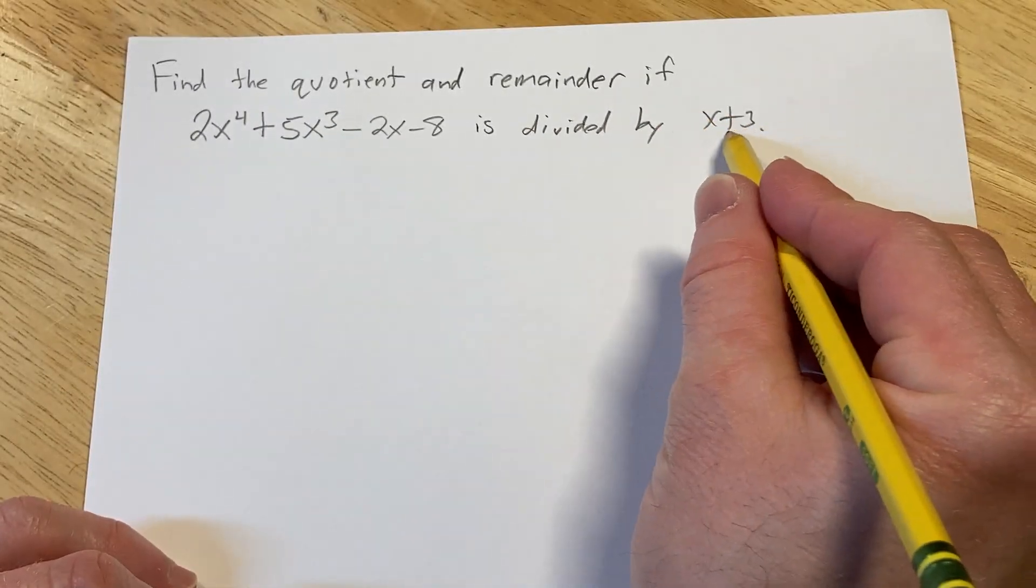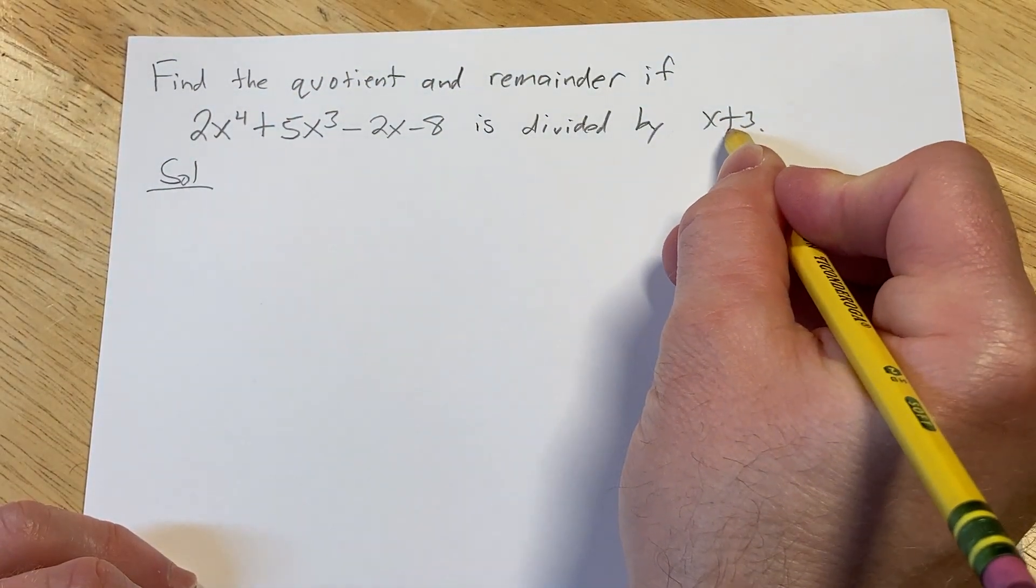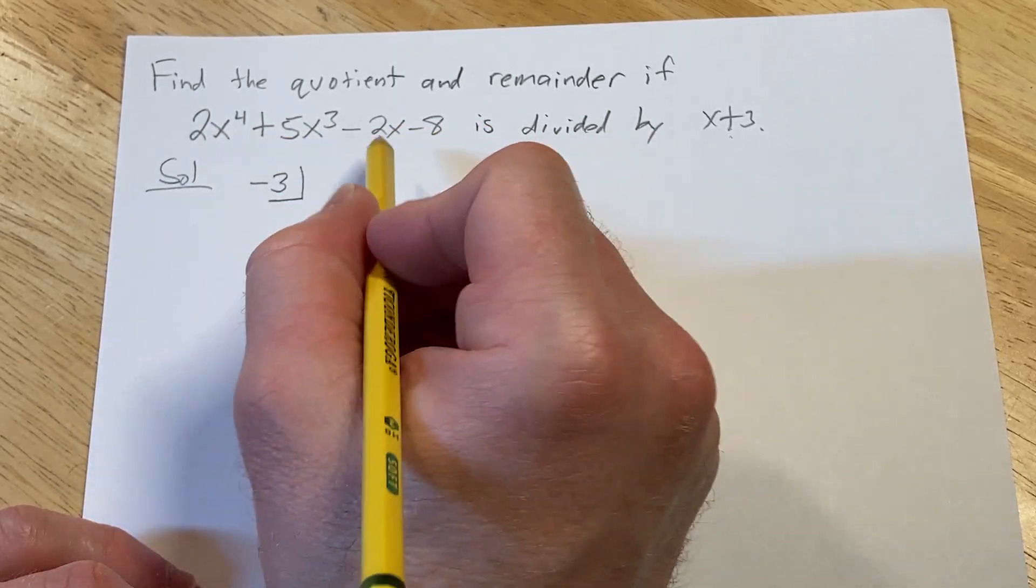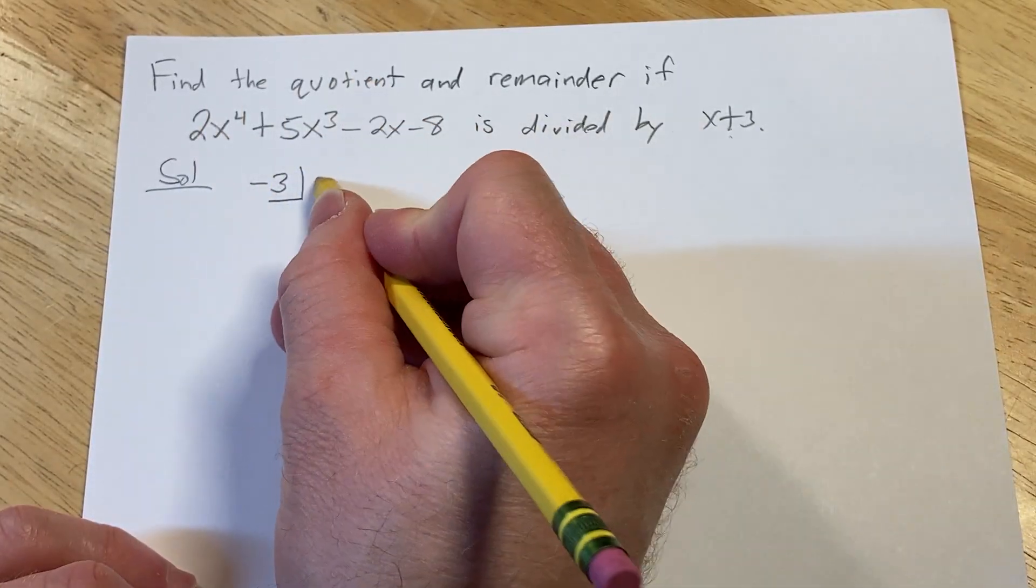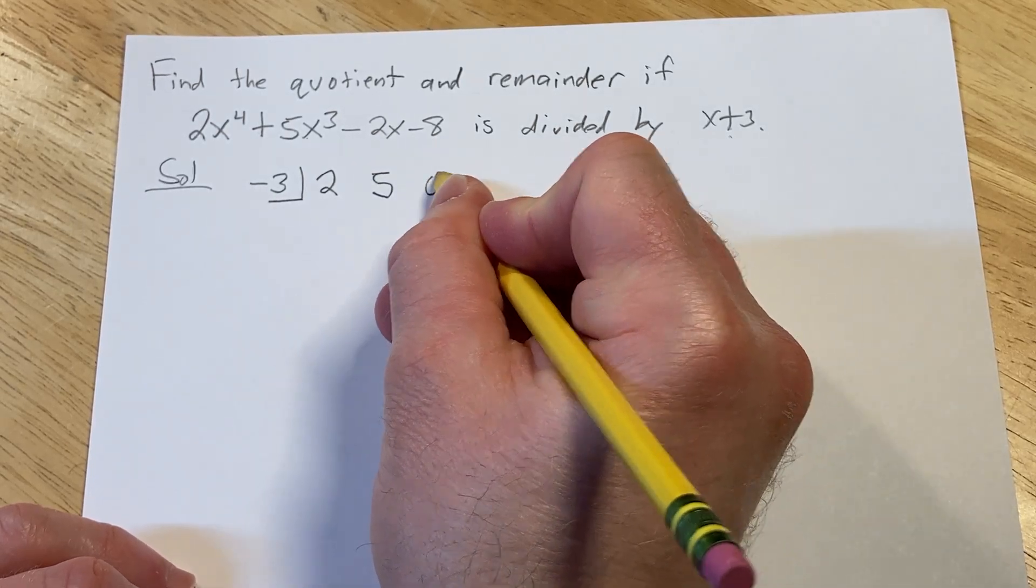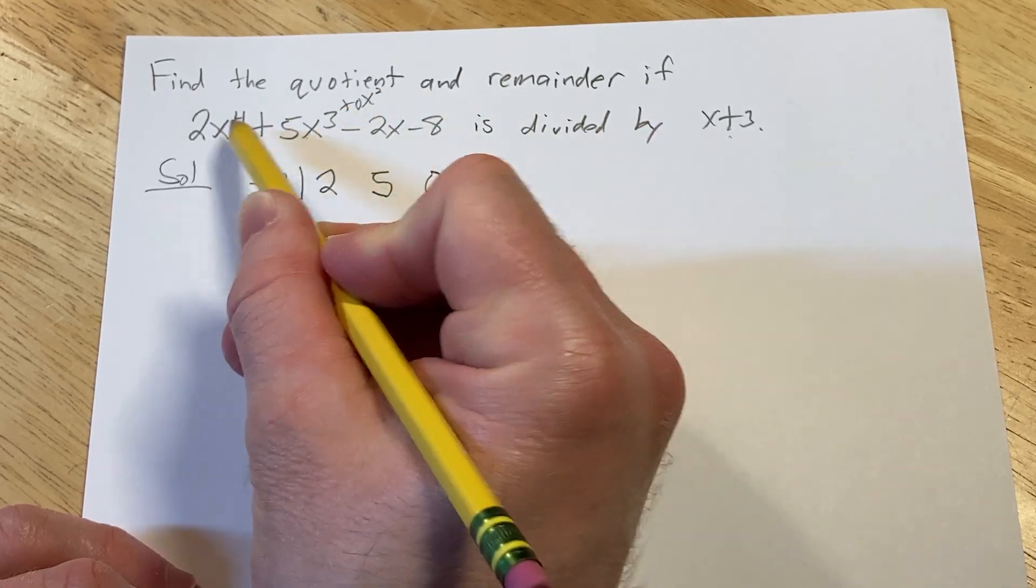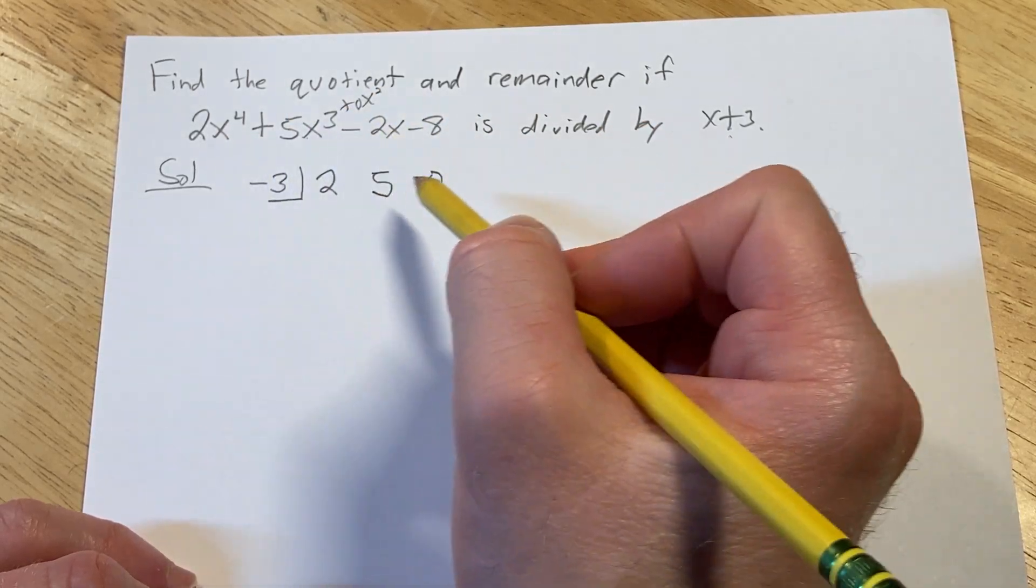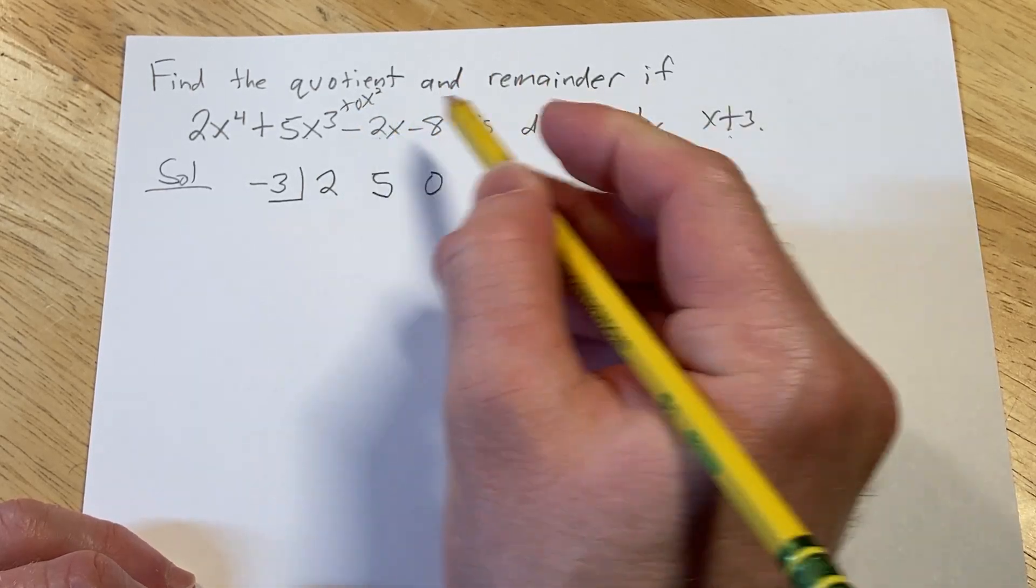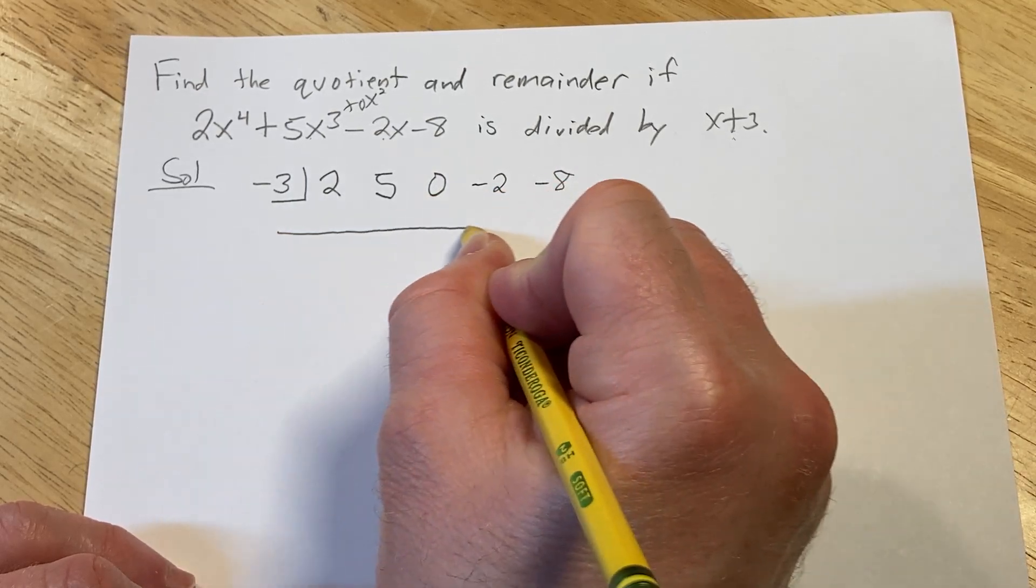So the first thing you want to do is switch the sign. So solution, I'm going to put a negative 3 here like this. We want to write down the coefficients. So you start with the 2, the 5, and then here's the tricky part. There's a 0. You might say, where's the 0 come from? Well, that's from the invisible 0x squared. So you have to write down the coefficients of all the powers of x, including the one that's not written because the coefficient is 0. Then minus 2, and then minus 8. And then you draw a line.